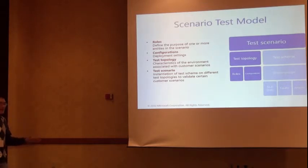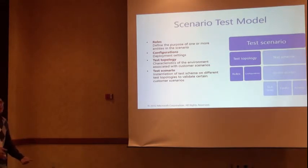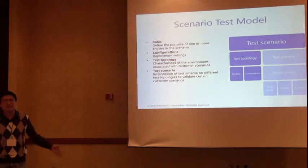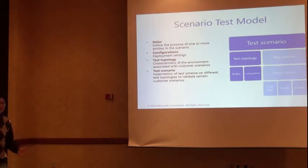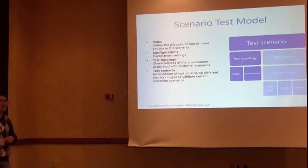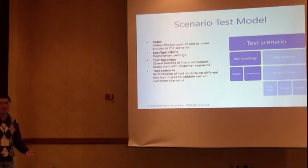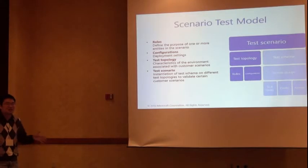For example, a file server can be deployed by a small business with just one standalone server that doesn't need high availability, or by a medium or large company that wants data replicating across different geographic regions. You really want to test the same features over different types of topologies. In our test lab, we can simulate a slow link between two machines to make it look like two machines sitting in different geographic regions.